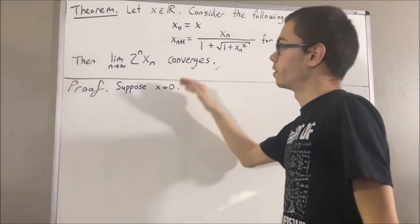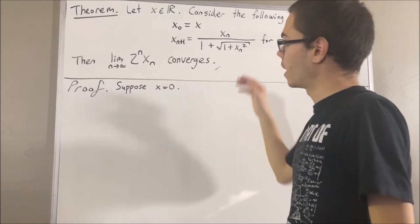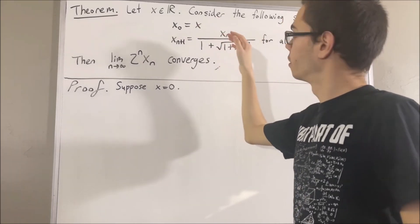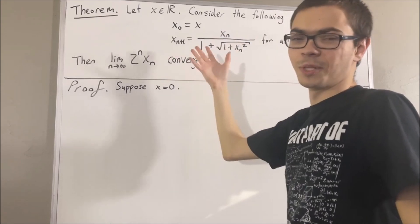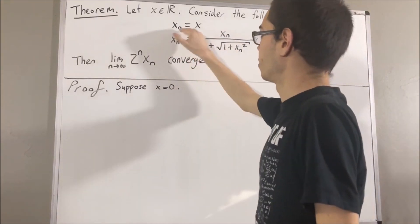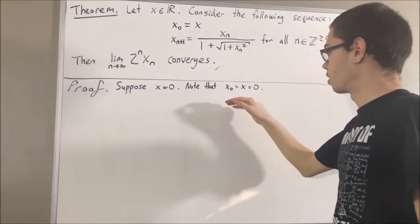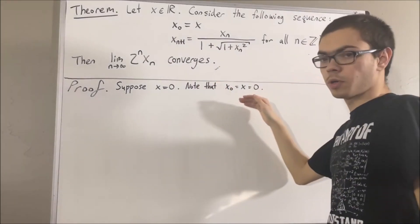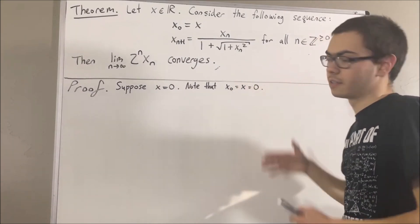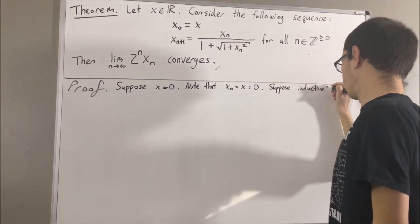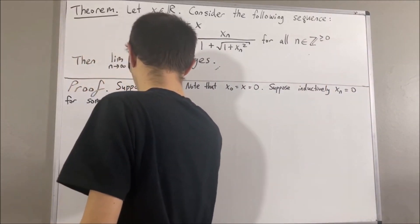In this case, we're first going to show that all of the xn's must be equal to 0, and we can establish that by induction. The base case is pretty much already done, because x0 is equal to x, which is equal to 0. For the induction step, we suppose inductively that xn is equal to 0 for some n.